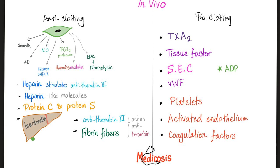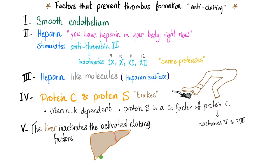Heparin is a naturally occurring substance — it's already in your body before taking any drugs. How does heparin work? It stimulates antithrombin 3, and then antithrombin 3 will actually do the heavy lifting by inactivating factors 9, 10, 11, 12, and if you want to be super sophisticated, add 2 and 7. So 2, 7, 9, 10, 11, 12.